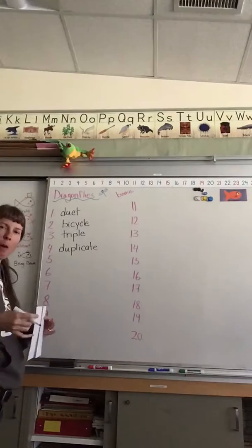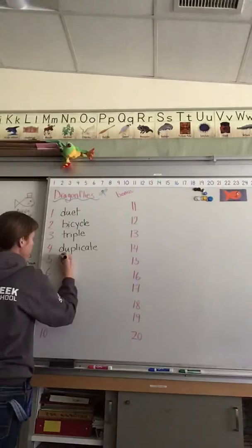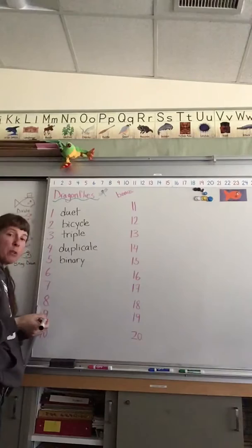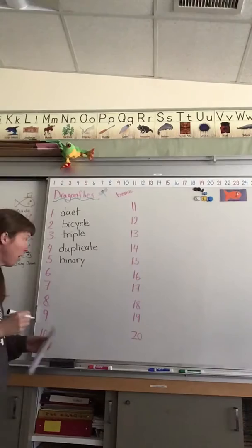Number five, binary. Binary is a computer language that only has two options. It's either zeros or ones and the entire language is made up of just zeros and ones.